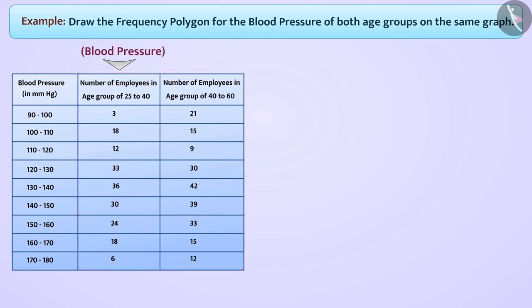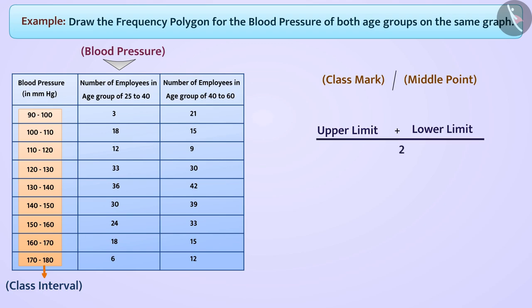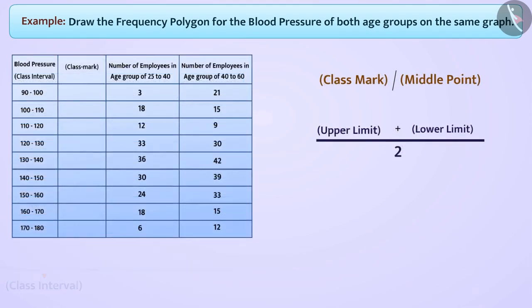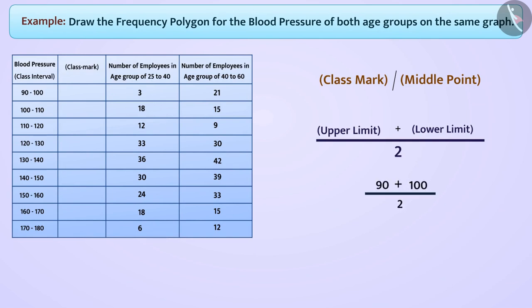First, we will find the class mark, that is, the middle point of each class interval. For this, we will divide the sum of the upper limit and lower limit of each class interval by 2. Like the midpoint of class interval 90 to 100 is 95. In the same way, we will find the class marks of all class intervals.